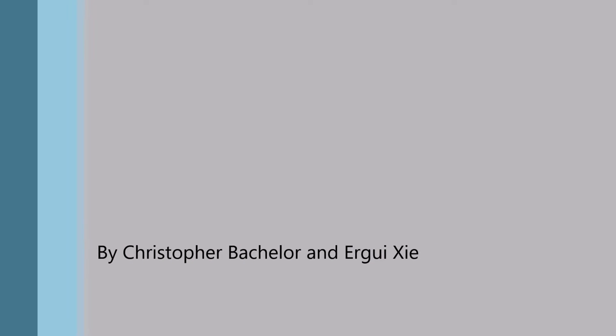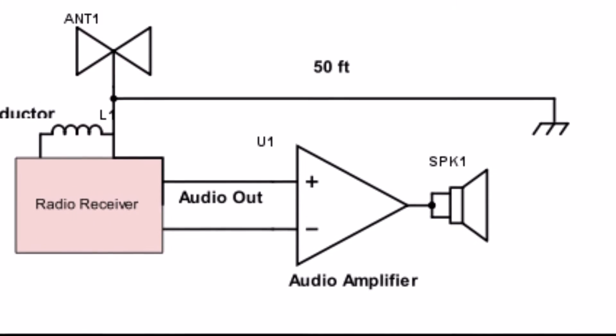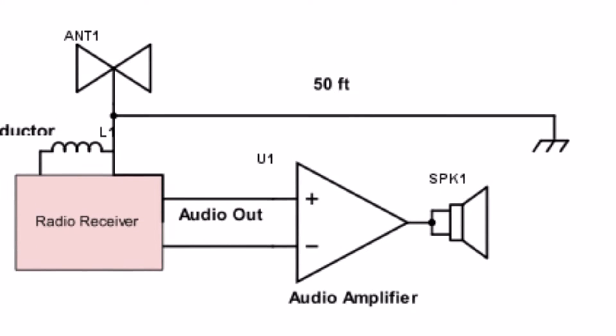Our main goal for this project was to create an AM radio receiver. The project consisted of the receiver itself, an antenna, and the audio amplifier.